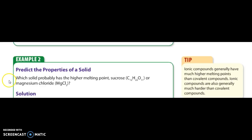Predict the property of a solid. Which solid probably has the higher melting point? Sucrose, C12H22O11, or magnesium chloride, MgCl2. Tip: ionic compounds generally have much higher melting points than covalent compounds. Ionic compounds are also generally much harder than covalent compounds. So hit pause, get your answer.